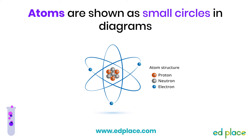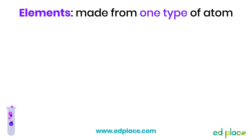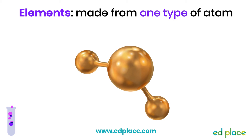An atom is the smallest particle that can exist — everything is made from atoms, and atoms are shown in diagrams as small circles. An element is made up of one type of atom only. For example, a piece of pure copper is made up of only copper atoms. There are 118 known elements on Earth, and they're all listed in the periodic table.